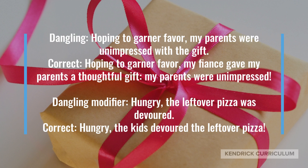Another example of a dangling modifier is: 'Hoping to garner favor, my parents were unimpressed with the gift.' It can be correctly written: 'Hoping to garner favor, my fiancé gave my parents a thoughtful gift; my parents were unimpressed.'